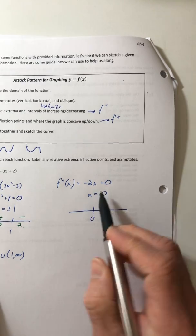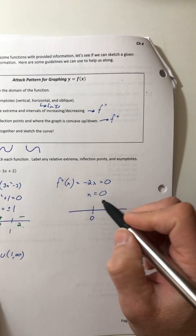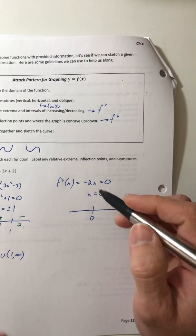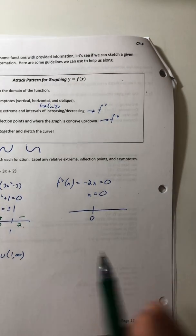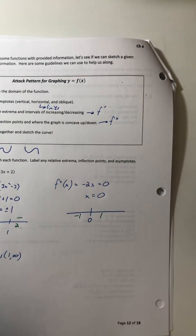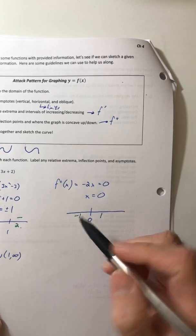So when you do the second derivative, don't just set it equal to zero and solve for x and then call it a day and go, oh, hey, I found them. You got to test them first. Because it's only an inflection point if concavity changes.